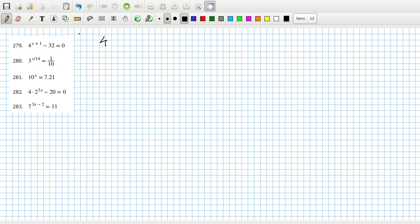So this will be 279. Four power x plus one equals 32. Well, you could actually say that's two power 2x plus 2 equals two power five. So you basically get 2x plus 2 has to equal 5, so that means x has to equal three over two. And again, I can check the answer. Yep, it's correct.